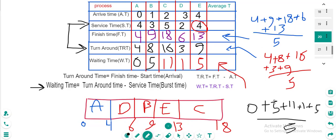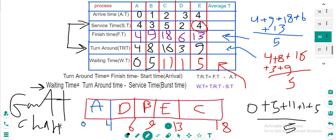Now you understand Shortest Job First, also called Shortest Time First. The Gantt chart helps us determine the finish time of each process: A finishes at 4, D at 6, B at 9, E at 13, and C at 18. Thank you for watching.